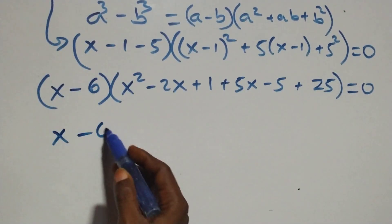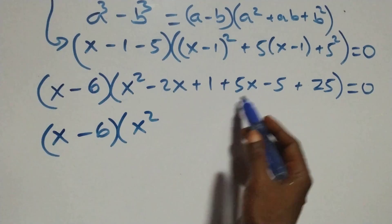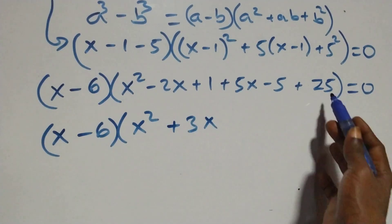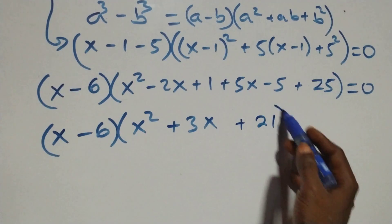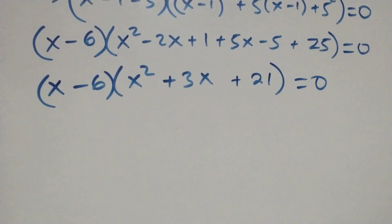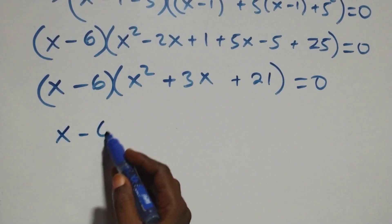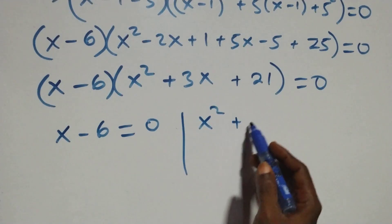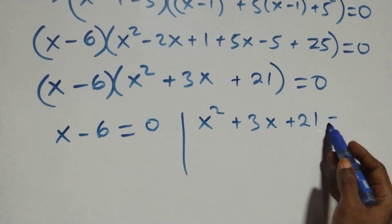This simplifies to (x−6)(x² + 3x + 21) equals to 0. So we have two sub-cases: x − 6 = 0, or x² + 3x + 21 = 0.